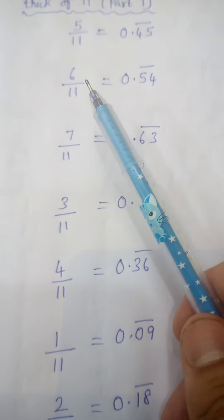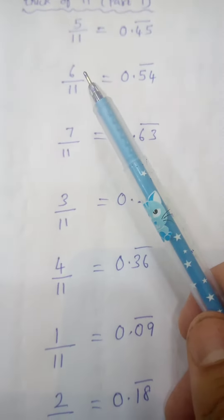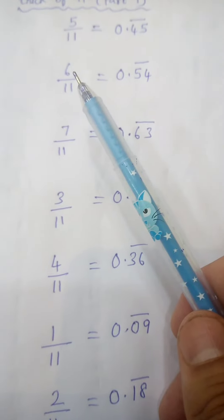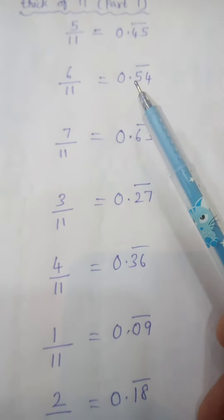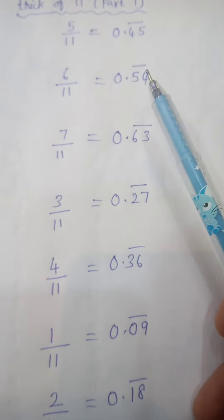Another example: 6 divided by 11. Multiply 6 with 9. 6 times 9 is 54, so you should write 0.54 and put a bar.